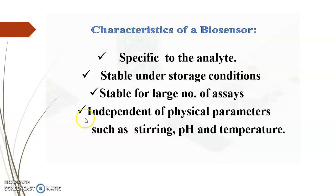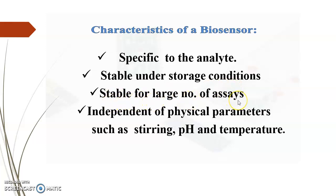What are the characteristics of a good biosensor? First, they must be specific to the analyte — for example, if you are measuring pH, the glass electrode will be able to sense H⁺ ions. They should also be stable under storage conditions and stable for a large number of assays. They must be independent of physical parameters like stirring, pH, and temperature.